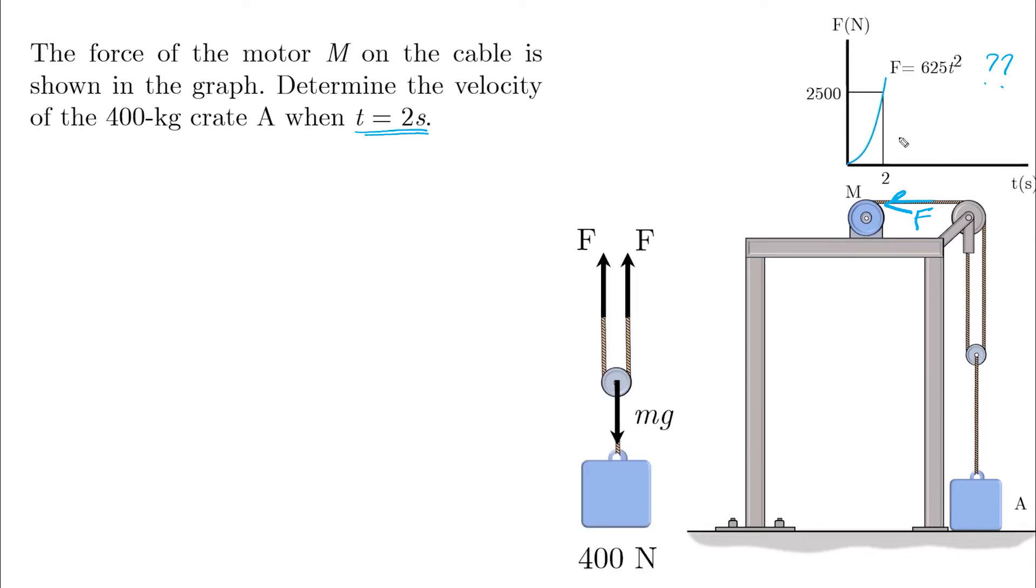If you look at the free body diagram and think about what will happen when t equals zero, the force is equal to zero and the block is not moving. We gradually increase the force until 2F becomes larger than the weight. At this instant, the block will start to have its initial velocity.